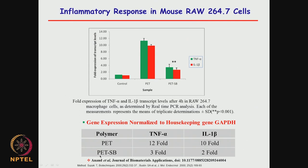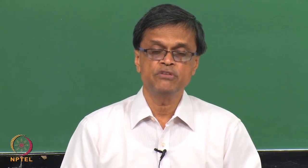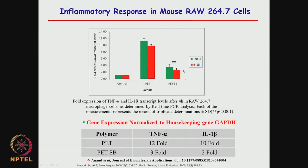Surface modification of biomaterials is a very important topic. You can do it through different approaches: plasma bombardment, UV radiation, immobilizing or coating anti-bacterial material, coating heparin — which prevents complement activation or platelet activation — and immobilizing enzymes. There are many different ways of modifying the surface to reduce blood coagulation, prevent platelet activation, and reduce inflammatory responses. This type of in vitro study is very important before actually going into in vivo animal studies.